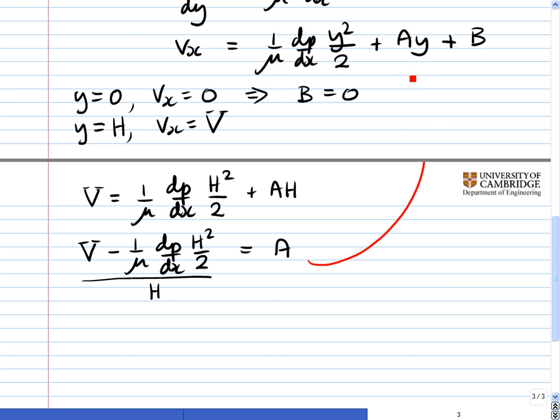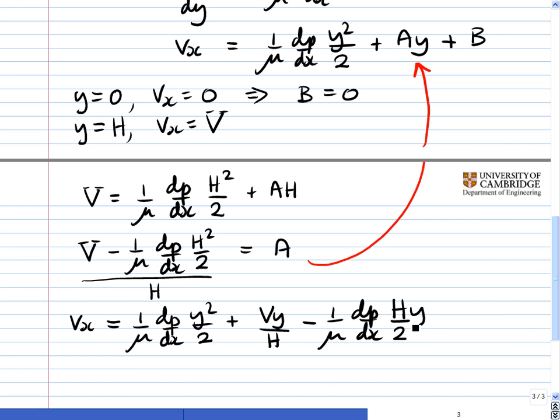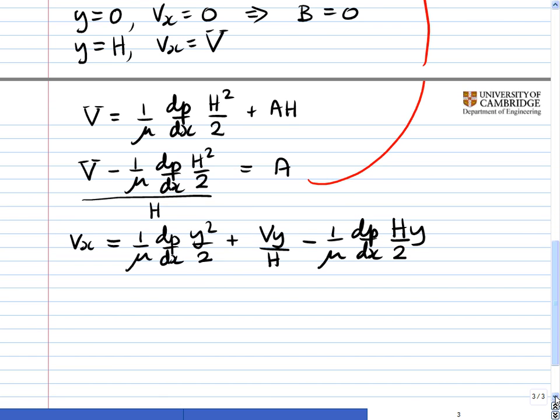Now we substitute this value of A into the expression for V. It starts off a little bit ugly, but then simplifies greatly. So we get vx = (1/μ)(dp/dx)(y²/2) + Vy/h - (1/μ)(dp/dx)(hy/2). Gathering together the terms in 1/μ, we're going to get vx = (1/μ)(dp/dx)(y² - hy)/2 + Vy/h.